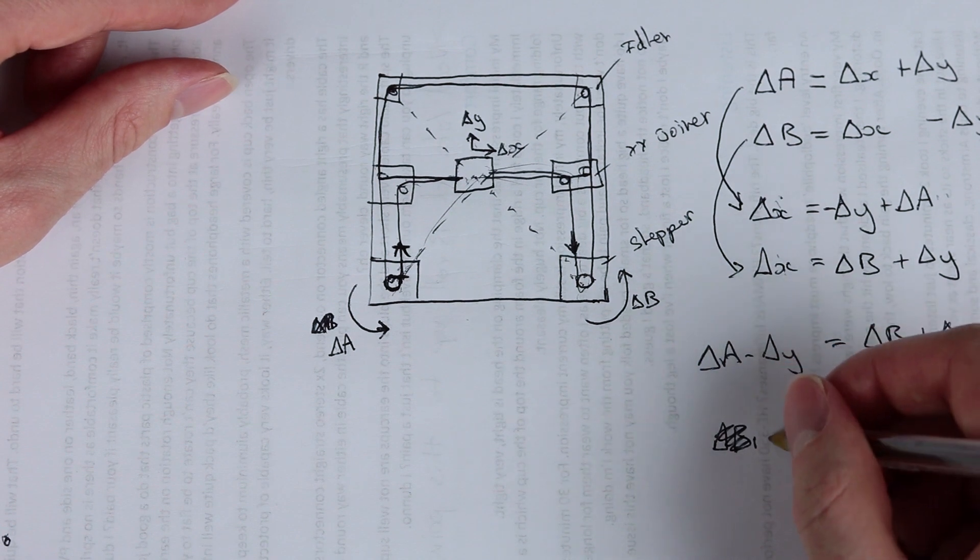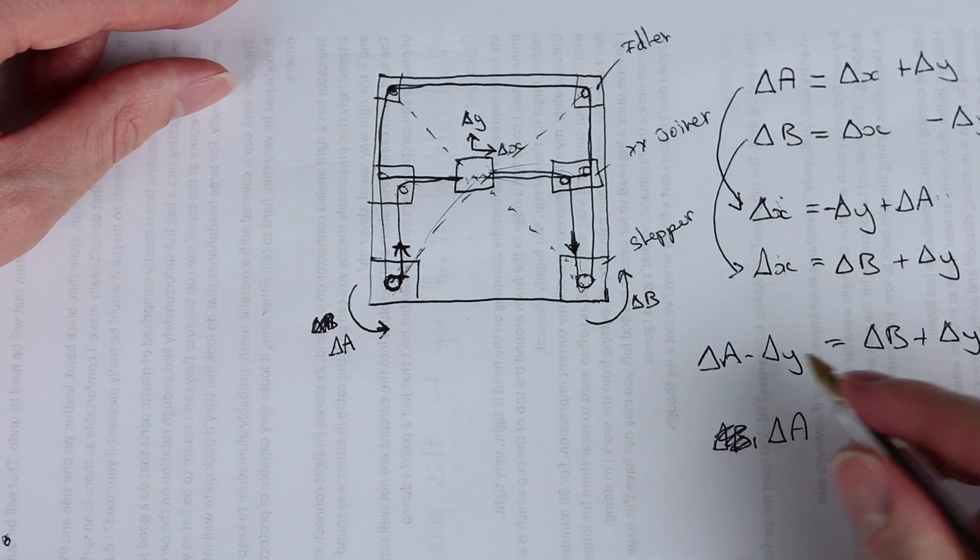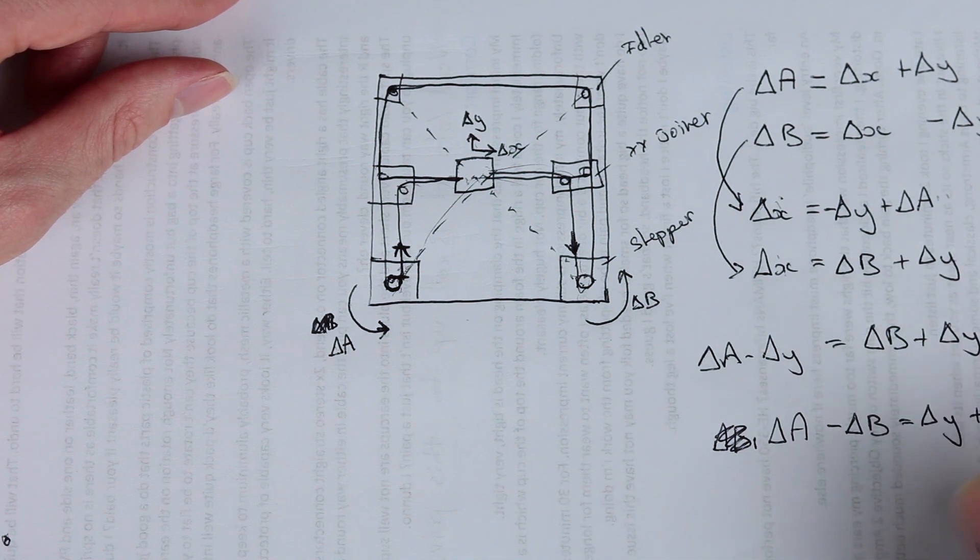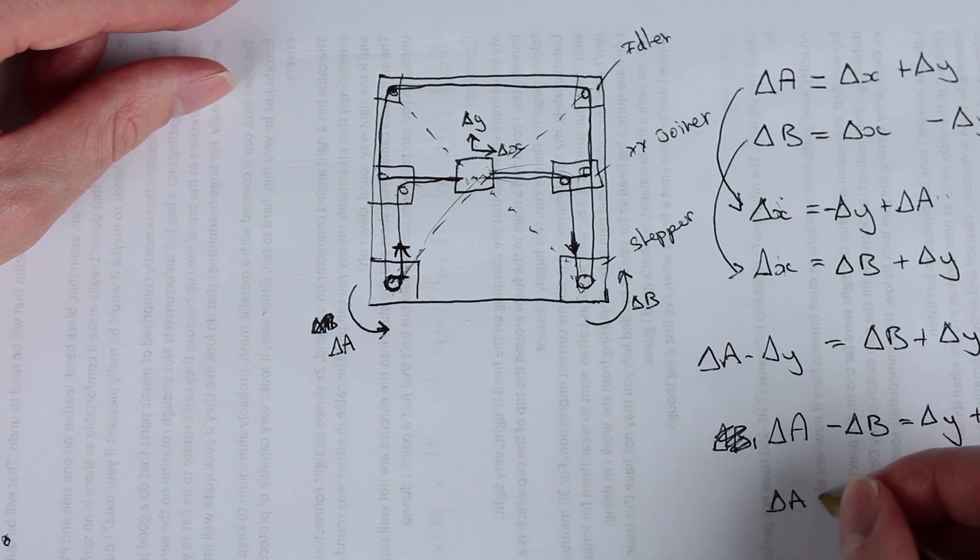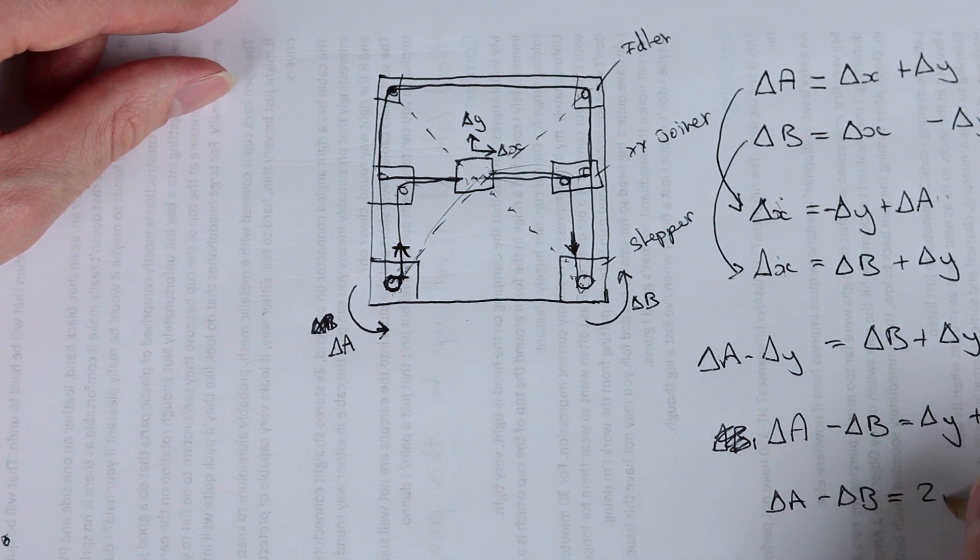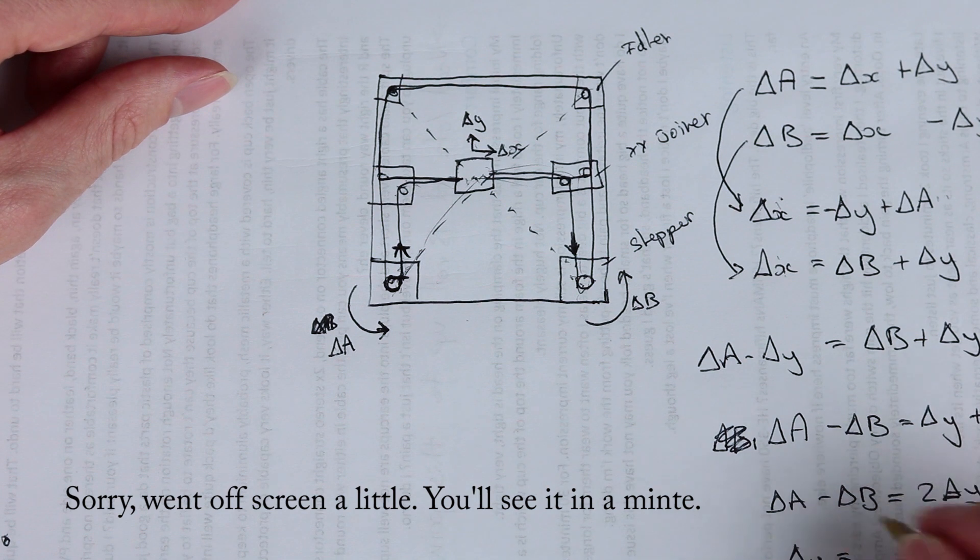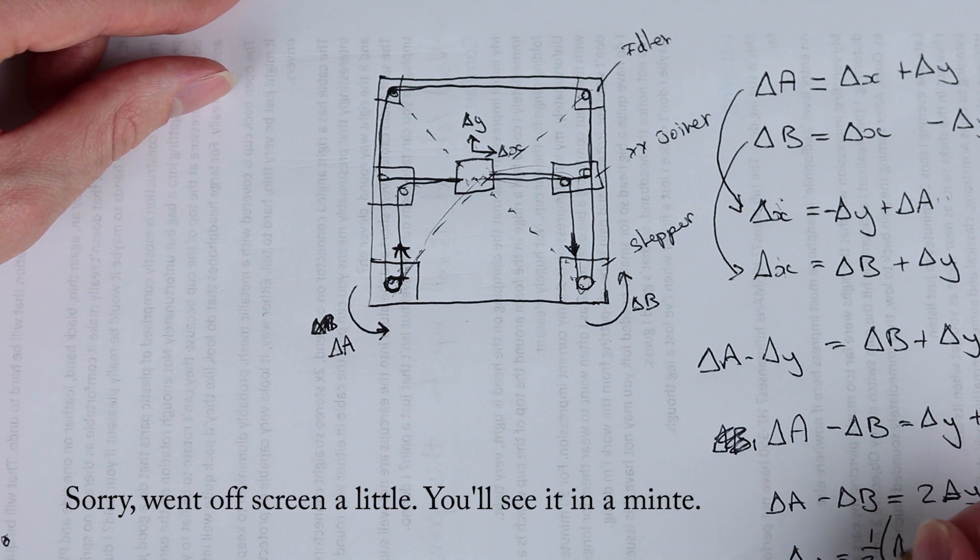Let's move this around a bit. We'll have delta A. We'll keep this here and move that one across. Minus delta B equals, move this one across, delta Y plus delta Y. So delta A minus delta B equals two delta Y. Or we can also say that delta Y equals, moving the two over, a half of delta A minus delta B.